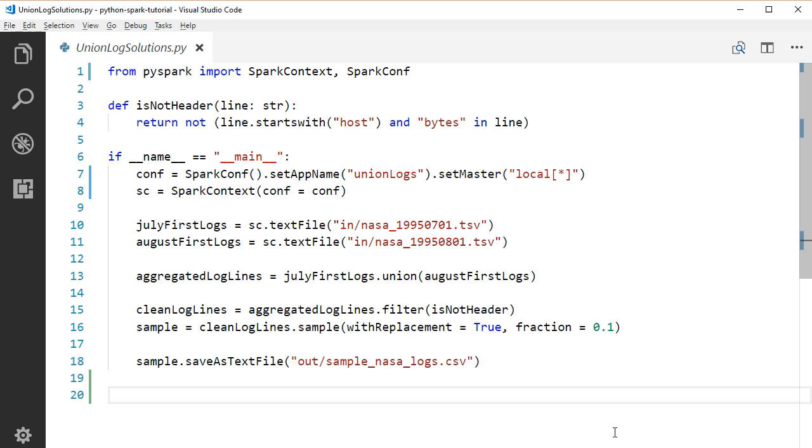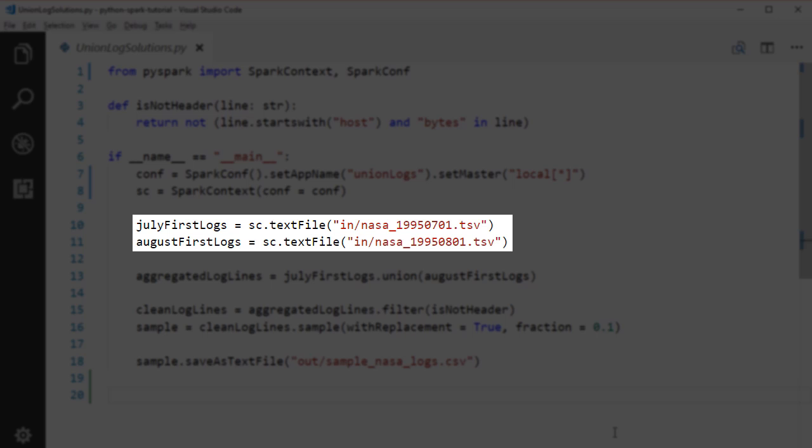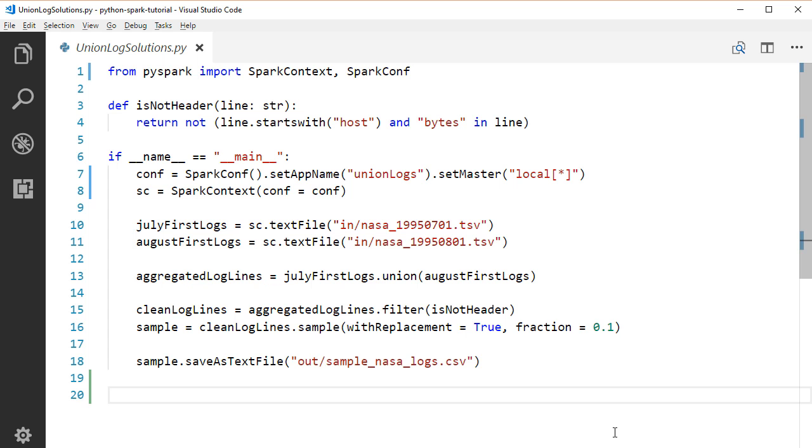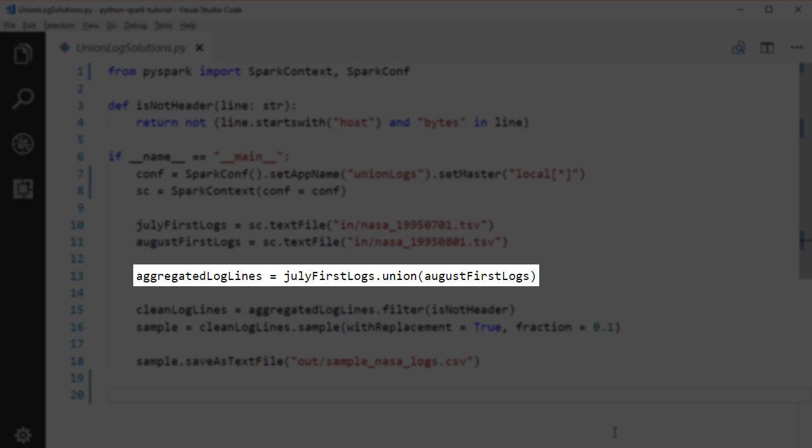Next, we load those two input log files as two string RDDs. Then, we call the union method on the July 1st log RDD and supply the August 1st log RDD as an argument. This will give us back an aggregated RDD that contains items from both RDDs.